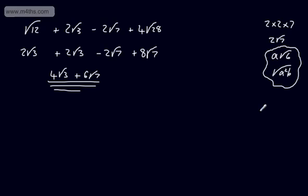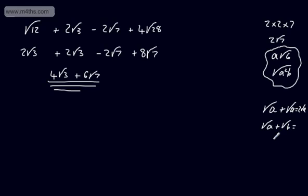In general, if we have root A plus root A, we end up with 2 root A. If we have root A plus root B, where A and B are not equal, then we just have root A plus root B. Don't try to combine these — don't write root 21 or anything like that. Just leave it as is.